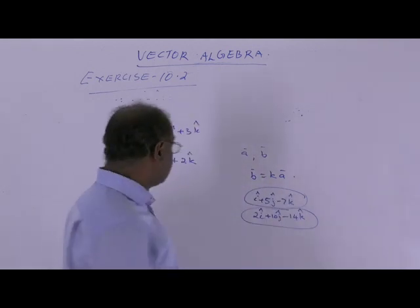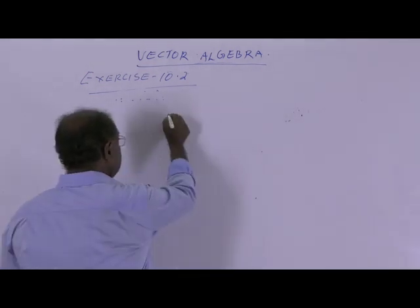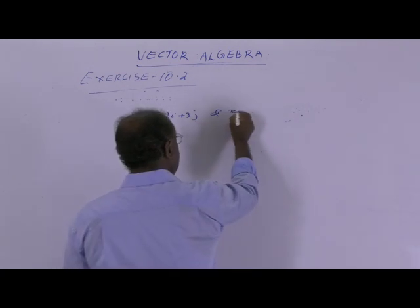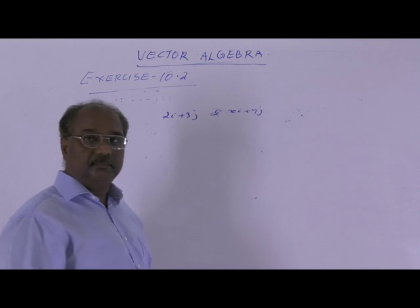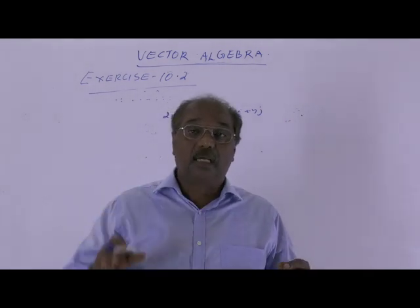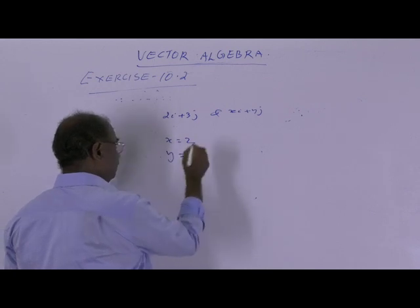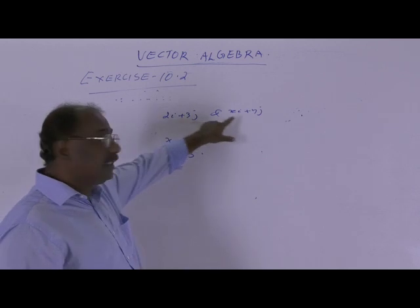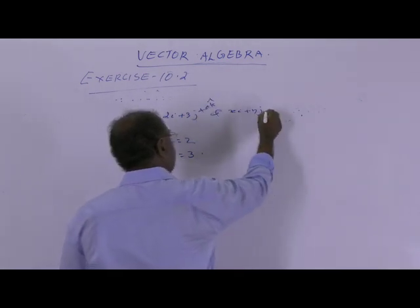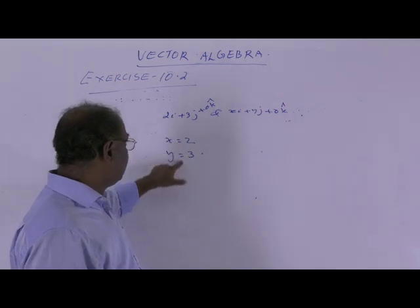Next: find the values of x and y so that 2i plus 3j and xi plus yj are equal. These two vectors are equal if their corresponding components are equal. So we see that if these two are equal, then x equals 2 and y equals 3.